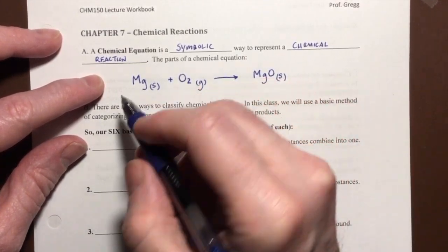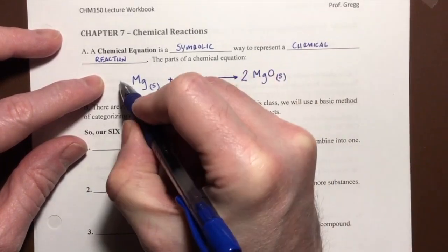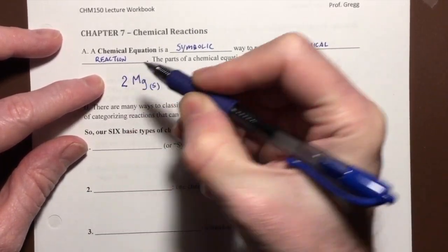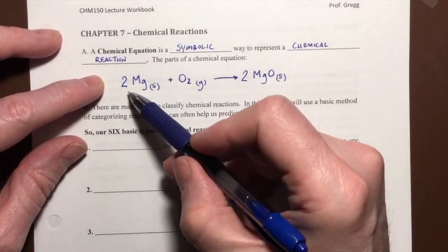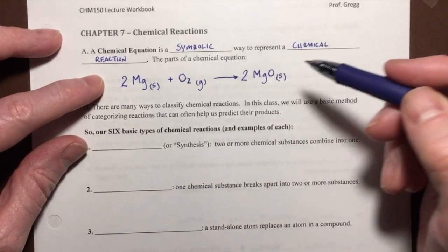I'm going to go ahead and balance this. There we go. Now it's balanced. I have two magnesiums, two magnesiums, two oxygens, and two oxygens.